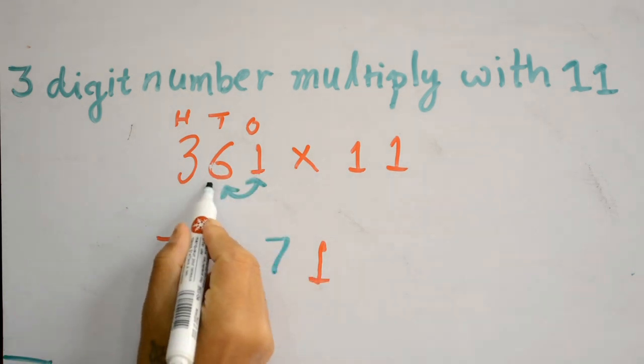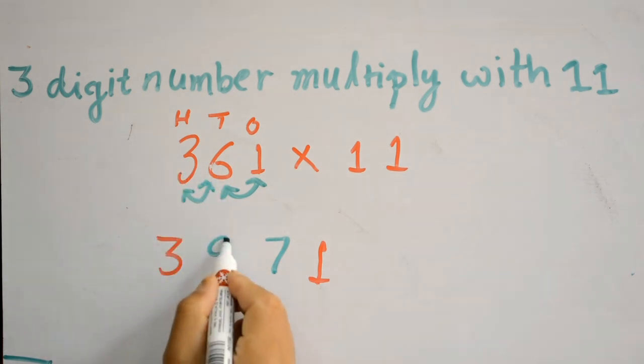Then add the tens and hundreds digit: 6 plus 3 is 9. The product of 361 times 11 is 3,971. Hope this video is useful for multiplying three-digit numbers with 11. See you next video!